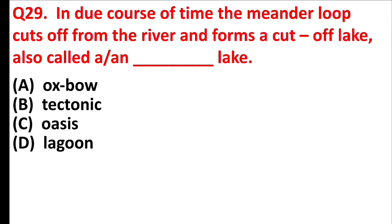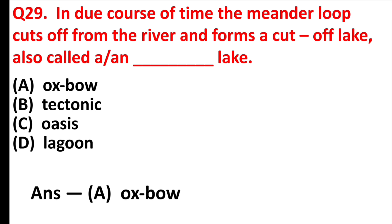In due course of time, the meander loop cuts off from the river and forms a cut-off lake, also called a blank lake. Answer is option A: oxbow.